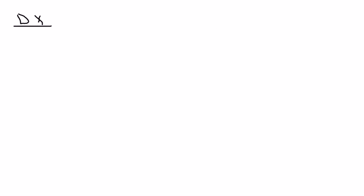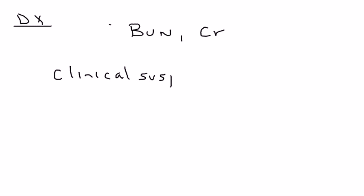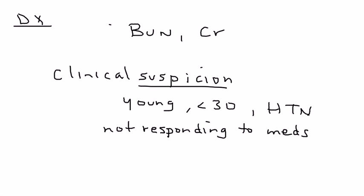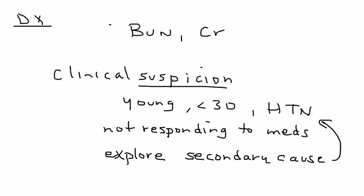Now let's get into the diagnosis. The first thing is to assess kidney function — BUN and creatinine. But if you have clinical suspicion, you'll need to do some very specific testing. Clinical suspicion means if you have a patient who is young — perhaps less than 30 years of age — they have hypertension, and it's not responding to standard medications, then you think that's strange and you explore a secondary cause of their hypertension.